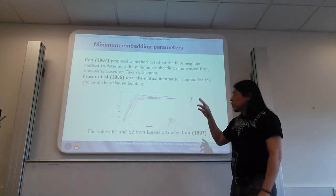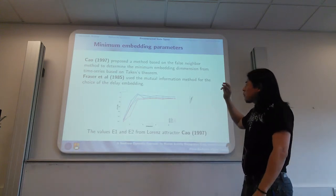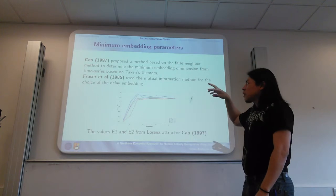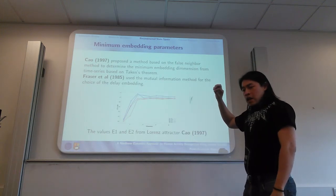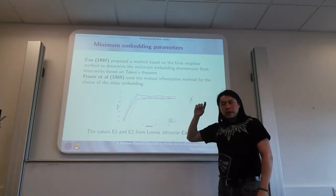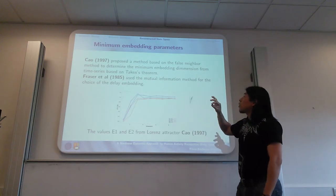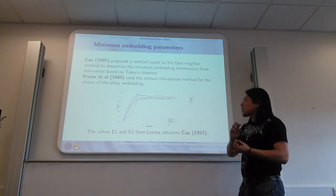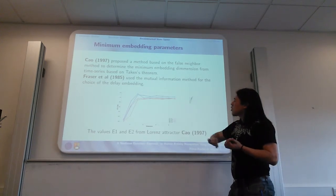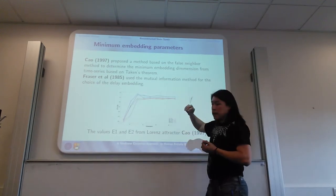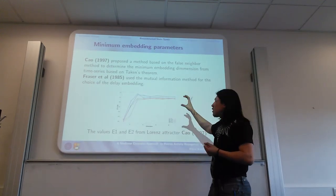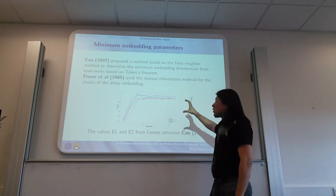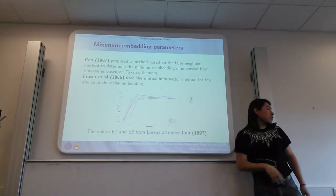At the moment I have found two publications in which they are using methods to obtain the minimal values for the embedding parameters m and tau. I'm working on understanding how they are computing these values and I am also running different simulations.